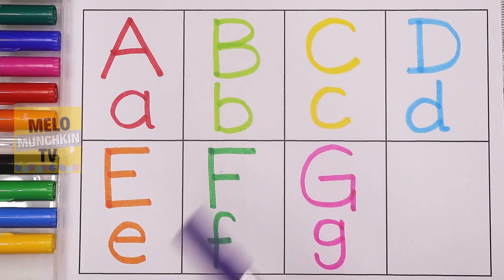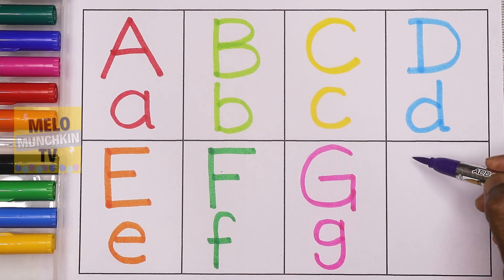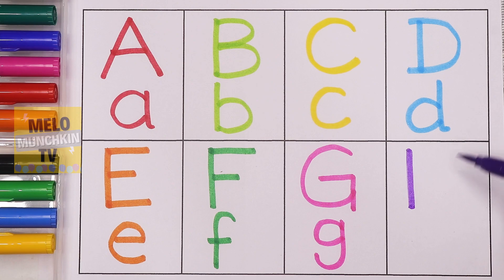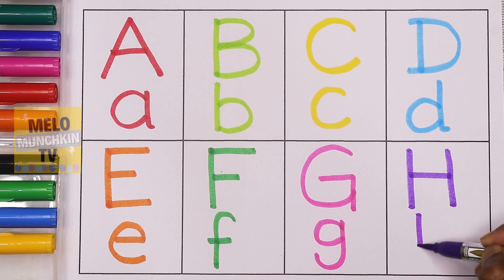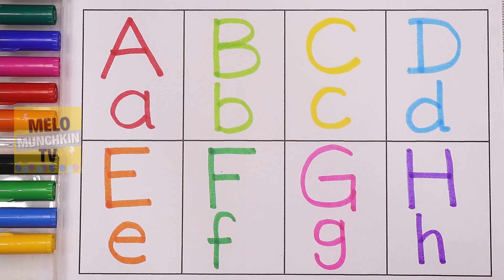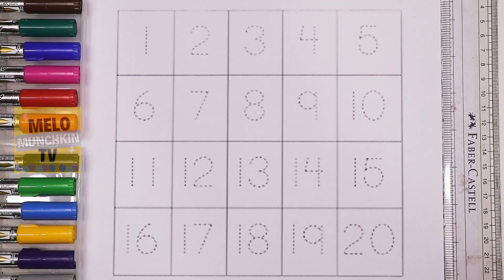Pink color. This is capital G. G for gate. This is small G. G for gate. Purple color. This is capital H. H for horse. And this one is small H. H for horse. So we have completed our alphabets from A to H, both in capital letters and small letters.